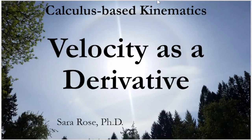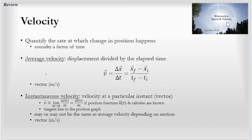This lesson covers velocity as a derivative in the kinematics sequence for calculus-based physics. In a prior lesson on kinematics, I covered speed and velocity — how velocity quantifies the rate of change at which position changes, incorporating a factor of time. Average velocity is displacement divided by elapsed time and happens over a longer time period, while instantaneous velocity is at a single point in time.